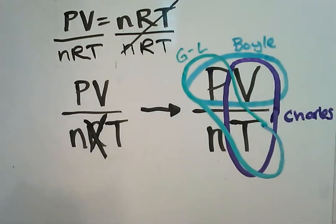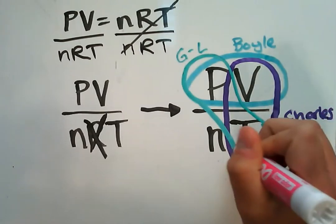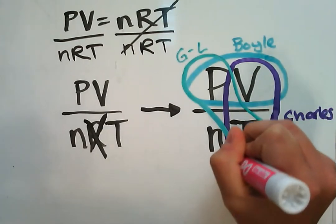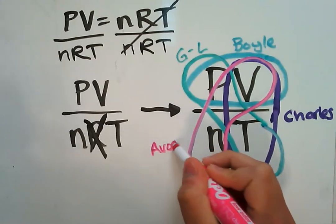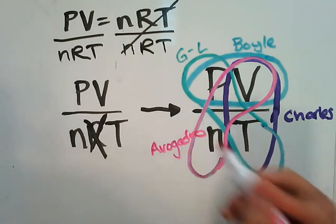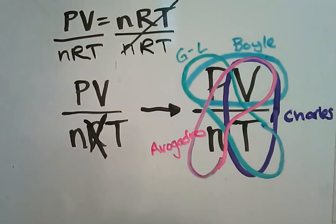Last but not least we have Avogadro's principle relating volume to number of moles. So this is Avogadro's principle relating volume to number of moles. And so using this circling method we can answer any question that's thrown at us about which gas law relates which two variables.